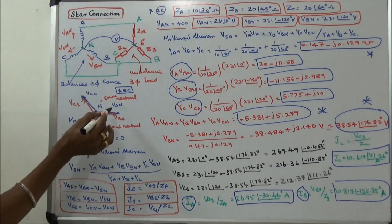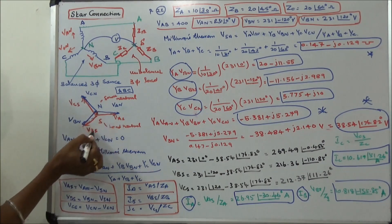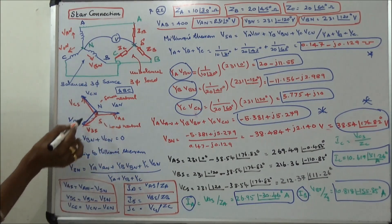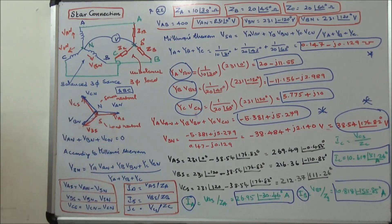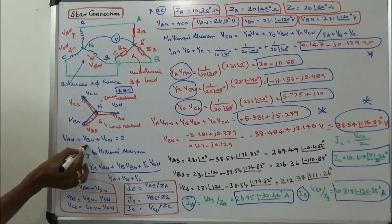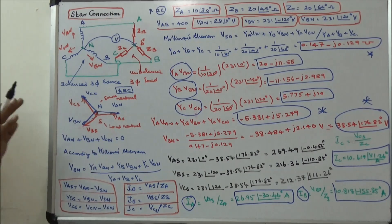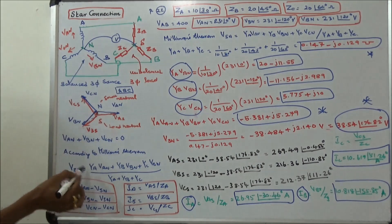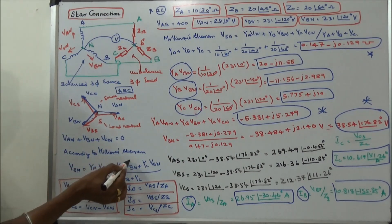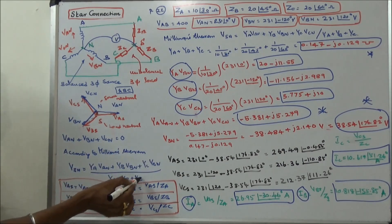This is the phasor diagram showing VAN, VBN, VCN on the source side and VAS, VBS, VCS on the load side. The source neutral and load neutral are distinct. In a balanced system, VAN plus VBN plus VCN equals zero. By Millman's theorem, VSN equals YA times VAN plus YB times VBN plus YC times VCN, divided by YA plus YB plus YC.